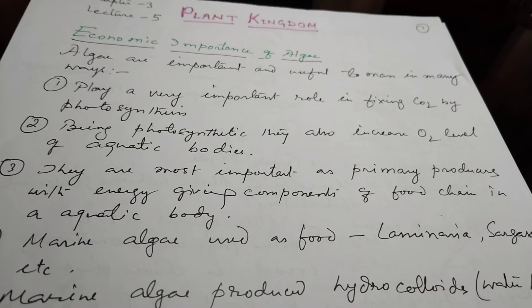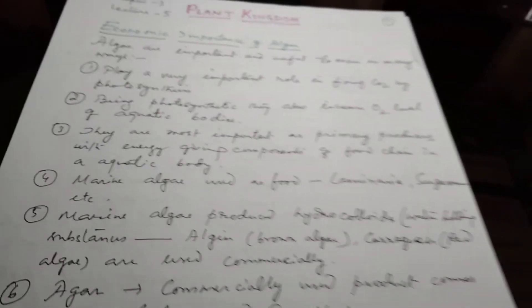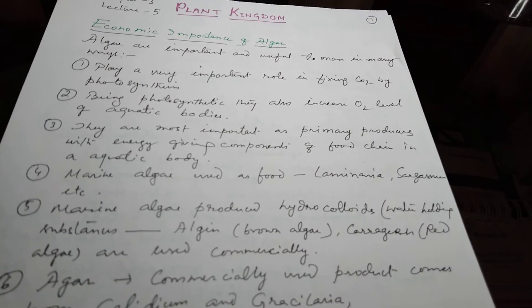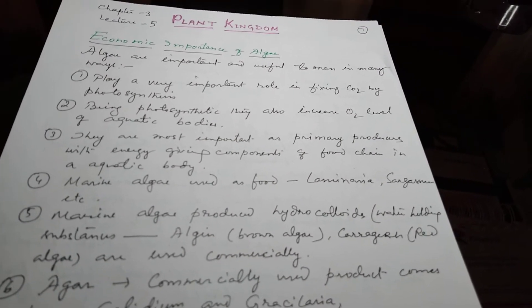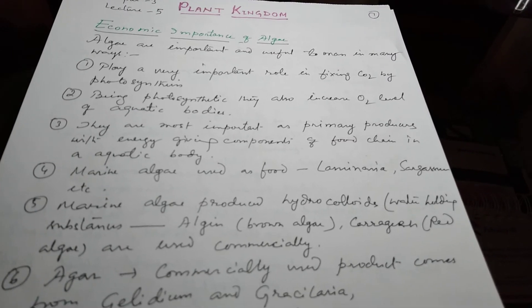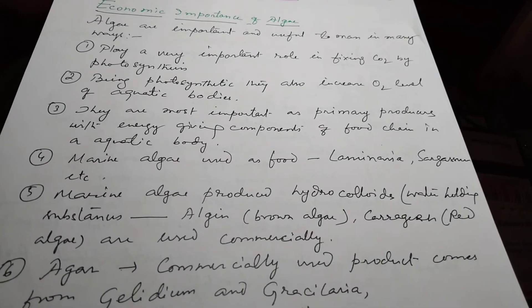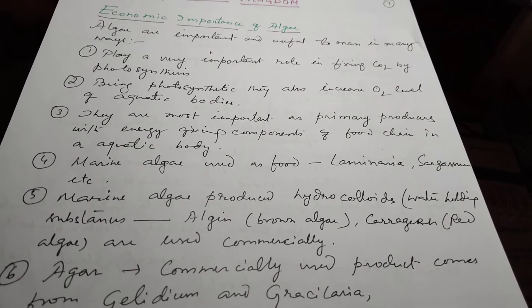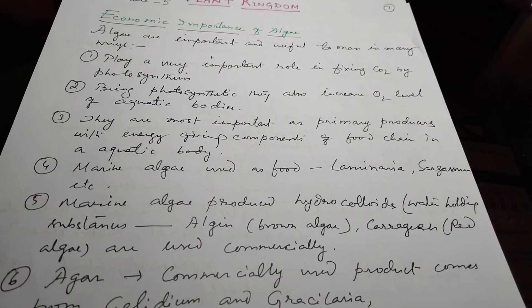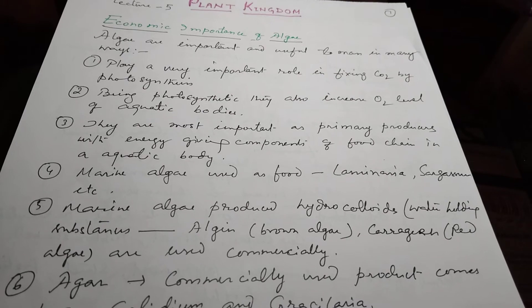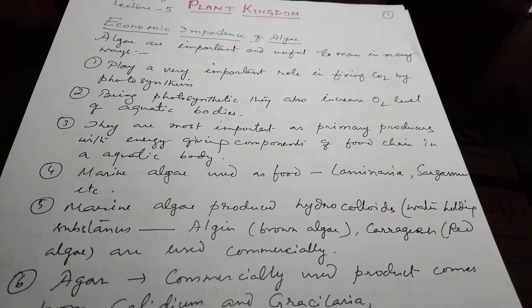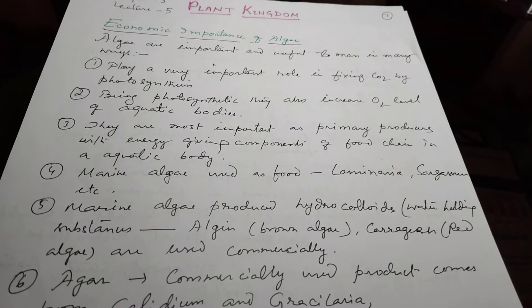Algae as food — Number 4: marine algae used as food, for example Laminaria, Sargassum, etc. Marine algae produce hydrocolloids — water-holding substances. Hydrocolloids: algin from brown algae, carrageenan from red algae are used commercially.